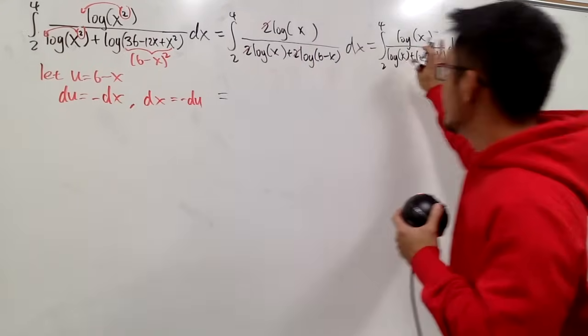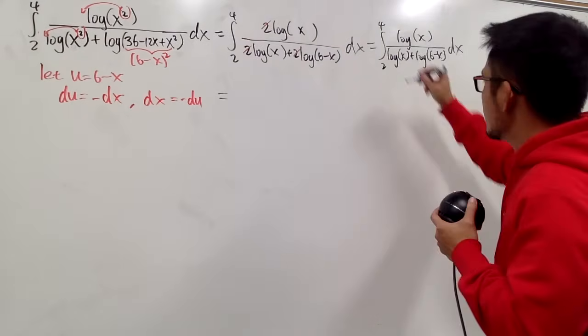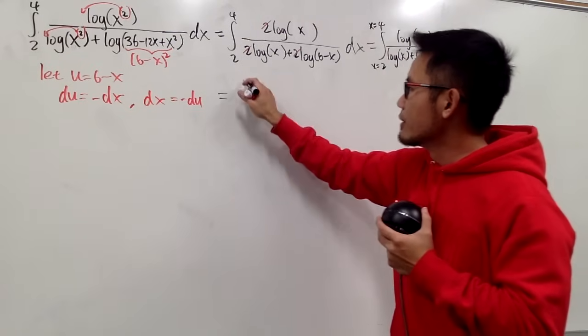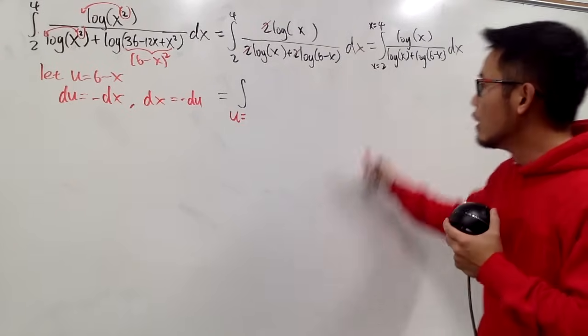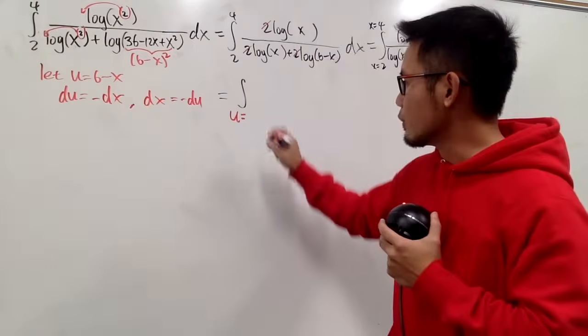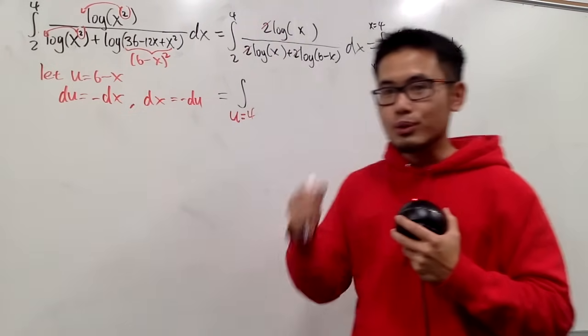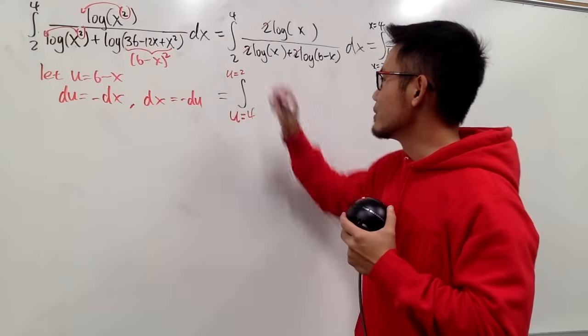And now we will take this integral from the x world to the u world. Don't forget, this is x going from 2 to 4. Now the integral has to go from u going from what? When x was 2, plug in 2 into here: 6 minus 2 is 4, so we have the 4 right here. And then when x was 4, plug in 4 here, u will be 6 minus 4, which is 2, right? So this is u equals to 2.